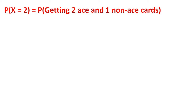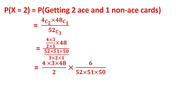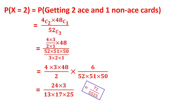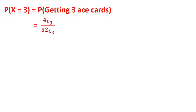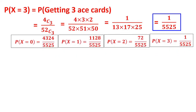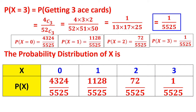For P(X=2), getting 2 aces and 1 non-ace: 4C2 × 48C1 / 52C3. Applying the combination formula — 4×3/2 × 48 — divided by 52×51×50/6 gives 72 / 5525. For P(X=3), getting all 3 aces: 4C3 / 52C3 = 1 / 5525. Now with all four probabilities for X = 0, 1, 2, 3, we represent them in a table as the probability distribution of X. Adding the numerators gives 5525, which equals the denominator, confirming the sum is 1.